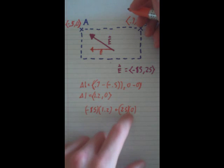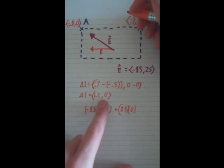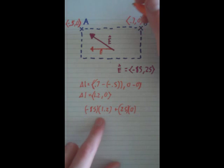That's why this 25, which is the Y component, will just multiply by the change in the Y component, which is 0.